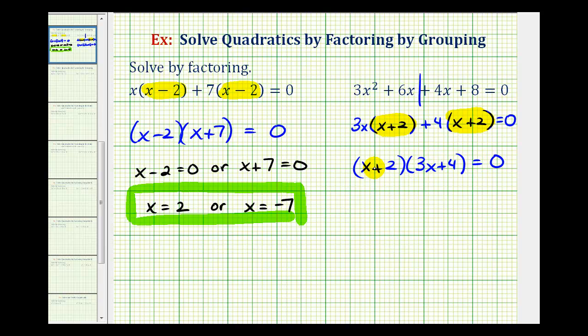And again, we have a product equal to 0. So the first factor of x plus 2 must equal 0. Or the second factor of 3x plus 4 must equal 0. So if we solve this first equation for x, we would subtract 2 on both sides. That would give us x equals negative 2.